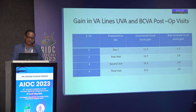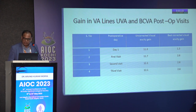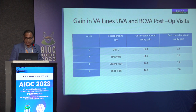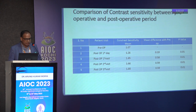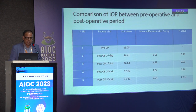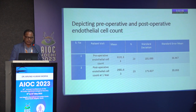Gain in uncorrected visual acuity improved from 11.3 to 12.1 lines, and best corrected visual acuity gain improved from 1.3 to 2.6 lines. Contrast sensitivity improved from 1.07 to 1.66 at 18 months with a significant p-value of 0.01. IOP was stable, with pre-op average of 15.25 and 15.29 at the last visit — no significant difference. Endothelial loss was 5% from pre- to post-operative last visit.